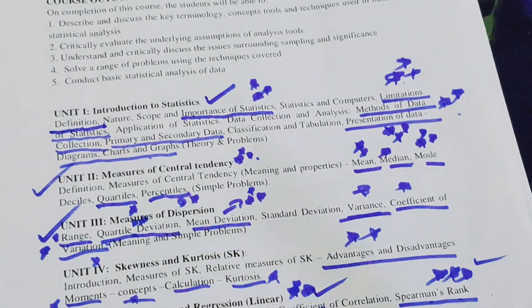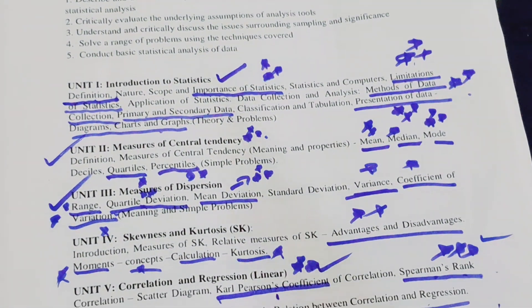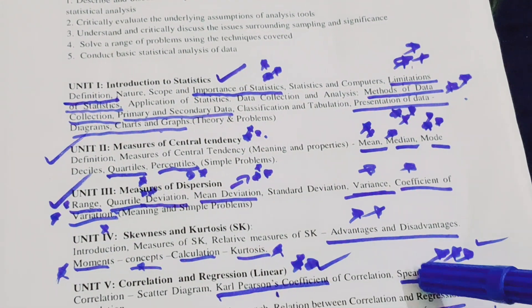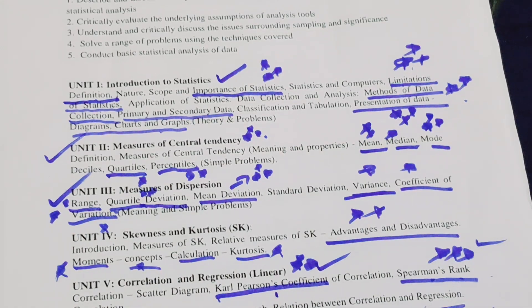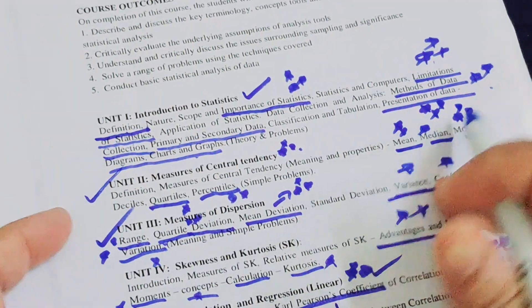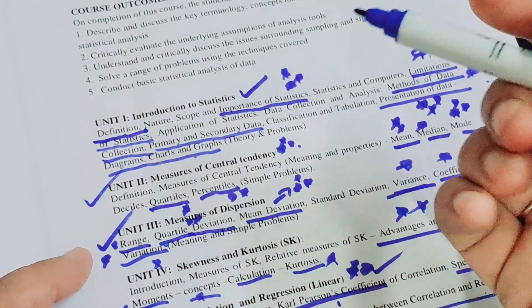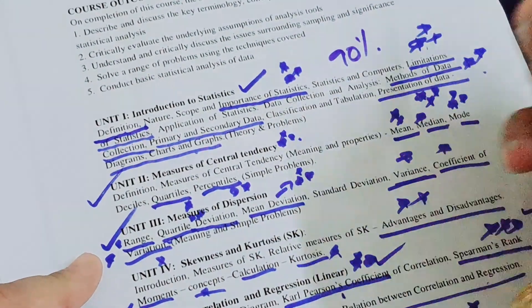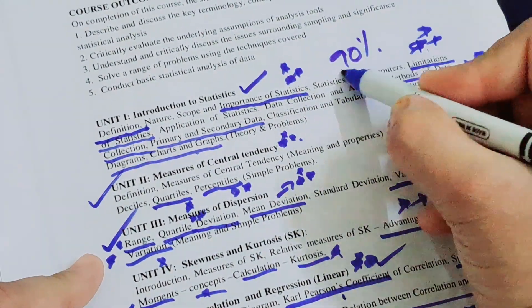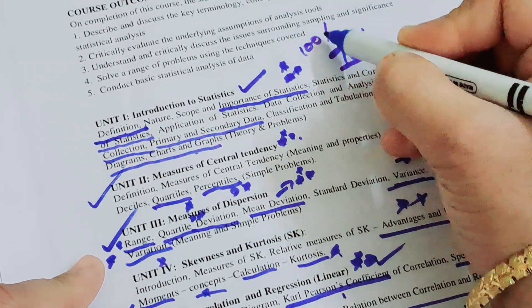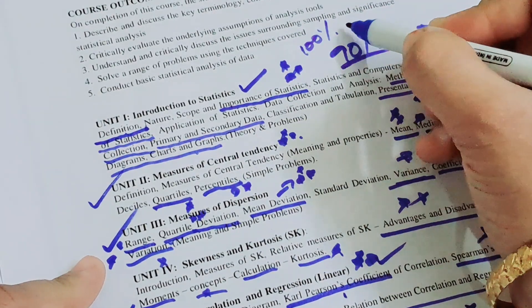Those are all five units discussed in detail. If you have any queries, please ask in the comment section. If you learn all the questions I have given, you will score more than 90 percent — I am giving you 100 percent pass guarantee.